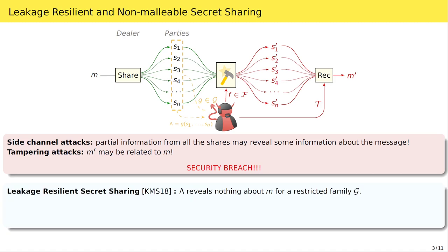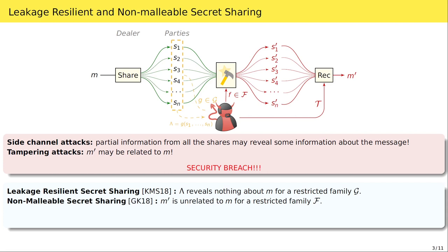In particular, in 2018, Kumar, Megan, and Sahai came up with leakage-resilient secret sharing, achieving a scheme secure even if the attacker leaks a small amount of information from possibly all the shares. Before them, in the same year, Goyal and Kumar came up with non-malleable secret sharing, where even if the attacker manipulates the shares, the resulting reconstructed message is completely unrelated to the original one. Subsequent work combined these two properties, often achieving both together in what is called leakage-resilient non-malleability.